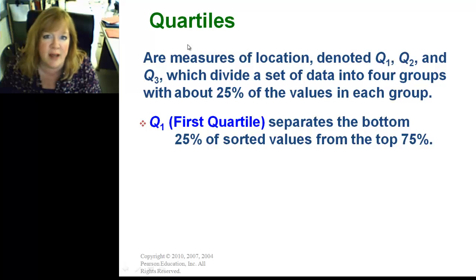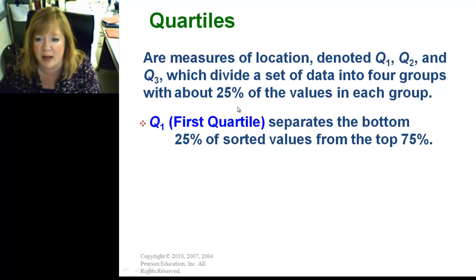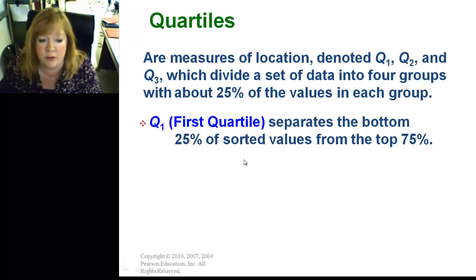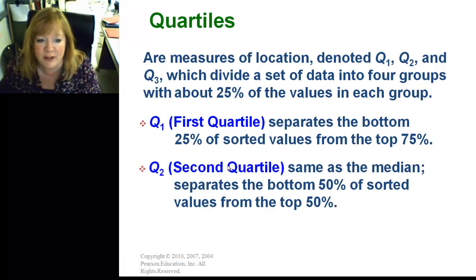Quartiles, just like we have four quarters in a school year, they're Measures of Location denoted by Q sub 1, Q sub 2, Q sub 3. Q sub 4 doesn't exist, so they only do it by Q1, Q2, and Q3. Divides a set of data into four groups, so you know what a quarter is. And about 25% of the values falls in each group. So, the first quartile separates the bottom 25% of the values. You take a fourth of your values and separate it. And that's quartile 1, the first quartile.